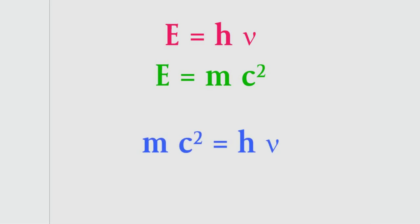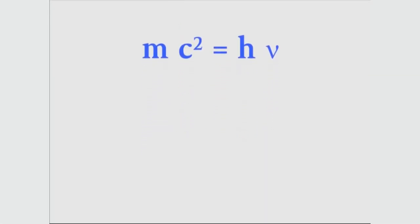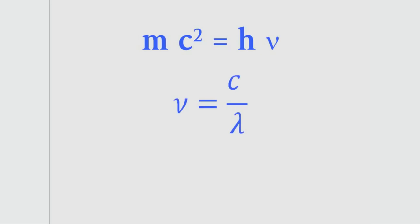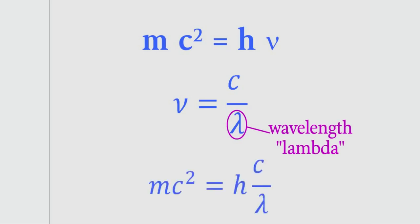Now the right side here has frequency in it, but it's a little easier to picture a wave's wavelength instead of its frequency. So let's change this. It turns out that the frequency of a light wave is equal to c divided by the wavelength. Wavelength has the symbol, Greek letter lambda. So let's put that in now for the frequency.